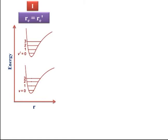The first diagram shows that the equilibrium distance of the ground energy state equals the equilibrium distance of the excited energy state, Re = Re'. The vibrational energy levels are shown as v = 0, 1, 2, 3 for the ground state and v' = 0, 1, 2, 3 for the excited state respectively.